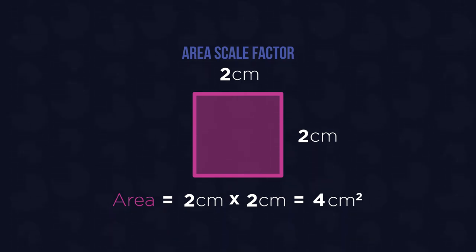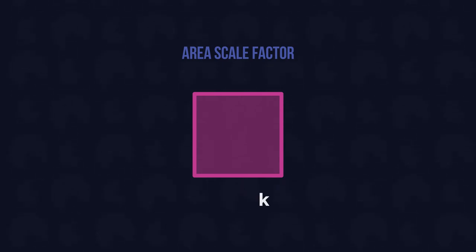The rule of thumb is that when the lengths of a shape are multiplied by a constant scale factor, represented by K, then the area will be multiplied by K squared. Let's test it out.